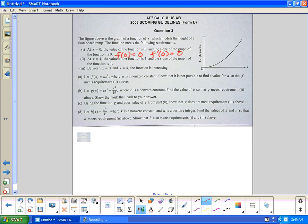At x equals four, the value of the function is one and the slope of the graph where the function is one. Between zero and four, the function is increasing. Let f(x) equal ax² where a is a non-zero constant. Show that it is not possible to find a value a so that f meets requirement two above.